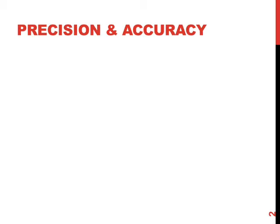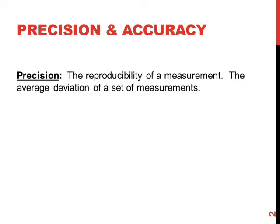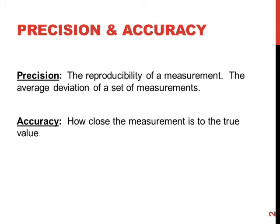The definitions of precision and accuracy are as follows. Precision is the reproducibility of a measurement, also known as the average deviation of a set of measurements. Accuracy is how close the measurement is to the true value.